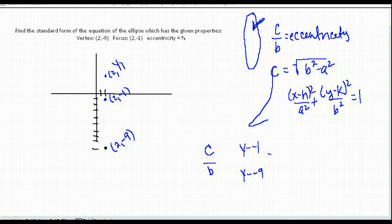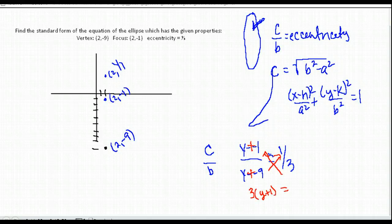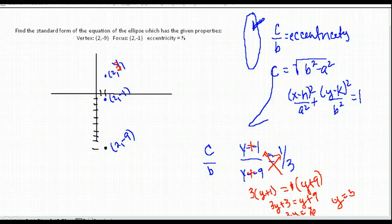Setting C/B = 1/3 and cross-multiplying: 3(y + 1) = 1(y + 9), so 3y + 3 = y + 9, giving 2y = 6, so y = 3. The y-coordinate of our center is 3.